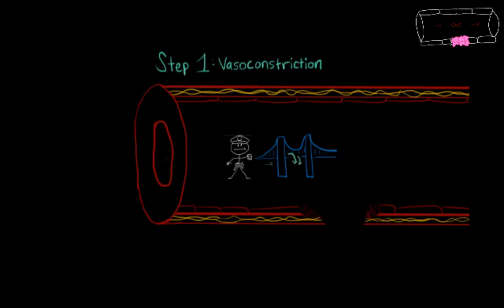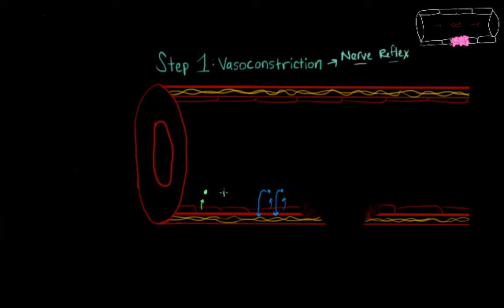We do vasoconstriction in two ways. One is just a nerve reflex. It's like a knee-jerk reaction. We have some injury and then all of a sudden our nerves tell our smooth muscle cells to contract. A second way we do it is by this blue molecule called endothelin, and it's secreted from the endothelial cells and acts on the smooth muscle cells in the blood vessel and causes vasoconstriction.